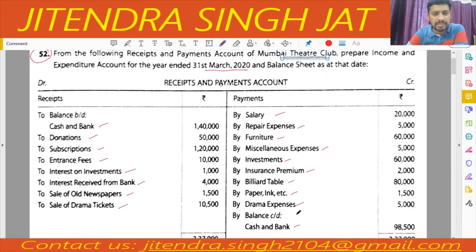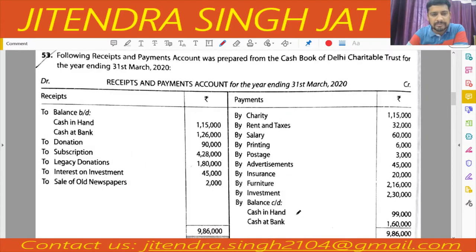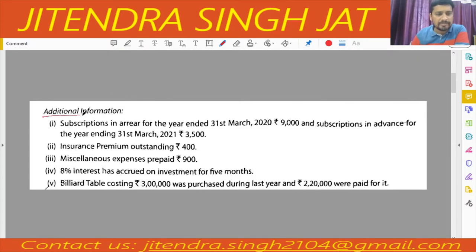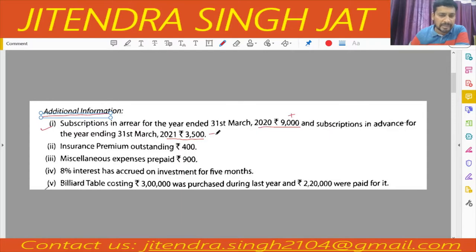Some additional information is also given. First point: subscription in arrears for the year ended 31st March 2020 is 9,000 — we will add this current year subscription in arrears. Subscription in advance for the year ending 31st March 2021 — this is advance subscription for next year, not the current year, so it will be subtracted. Second point: insurance premium outstanding is 400. Insurance premium is an expense and it is outstanding, so we will add it.